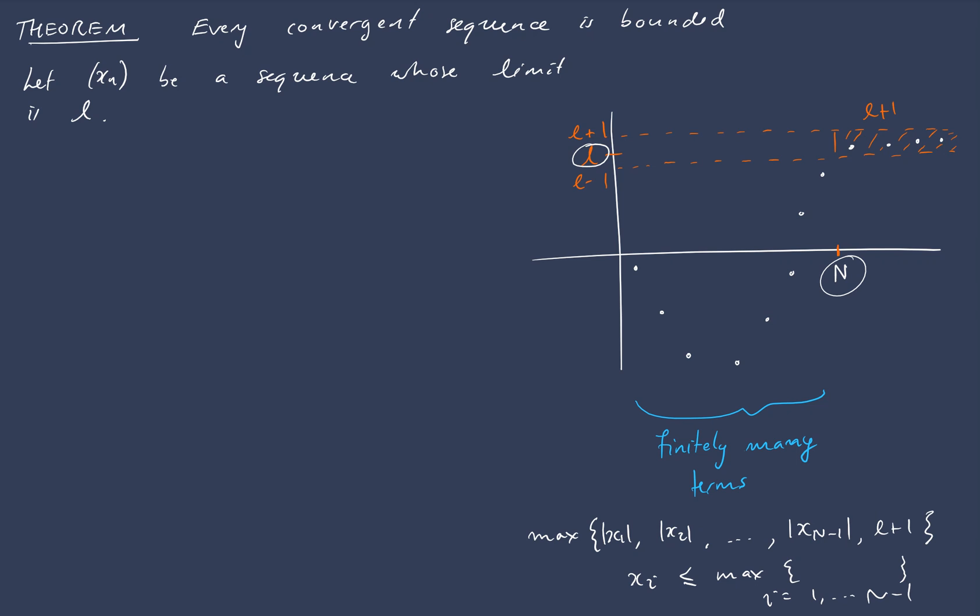However, L could be a negative number. And if L were negative, L plus 1 is going to be on the wrong side. So if L was a negative number down here, L plus 1 would be here. So L minus 1 would be the thing we're interested in. So rather than having L plus 1, we should make it the absolute value of L plus 1 as being our additional thing to consider.